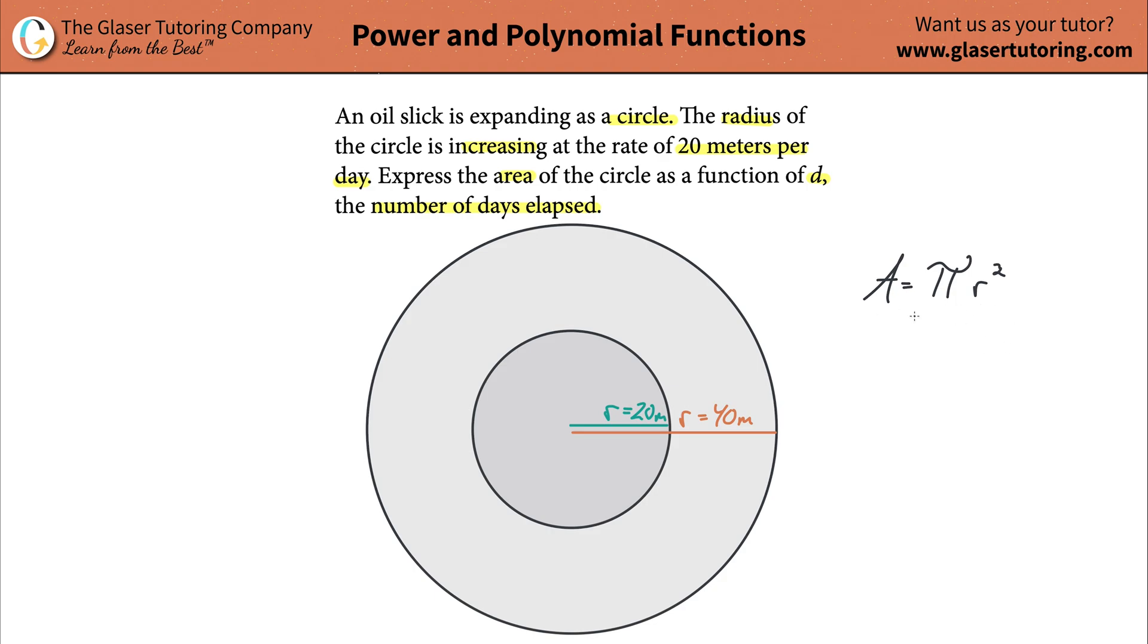Now, the question is, how do we calculate the area? Well, we need to know the radius. And what's happening to the radius? Well, the radius is going to be 20 meters the first day, and then 40 meters the second day, and then the third day it's going to be 60, and then the fourth day it's going to be 80, etc.